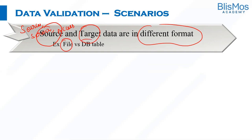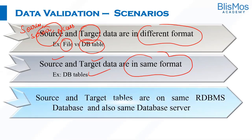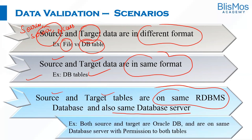The second scenario is where source and target are in the same format, like database tables. One more variation is where source and target tables are in the same RDBMS and also on the same database server. An example of that is where both source and target are on Oracle DB, on the same database server, with permission to both tables.